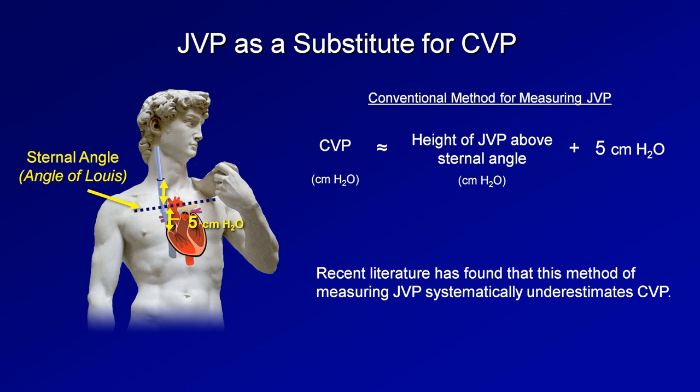In shock, when trying to differentiate hypovolemic and distributive shock with their low CVPs from cardiogenic and obstructive shock with their very high CVPs, it's not common to find CVPs in the high normal to mildly elevated range. As a consequence, even if JVP systematically underestimates CVP, this should not significantly impact most assessments of shock.